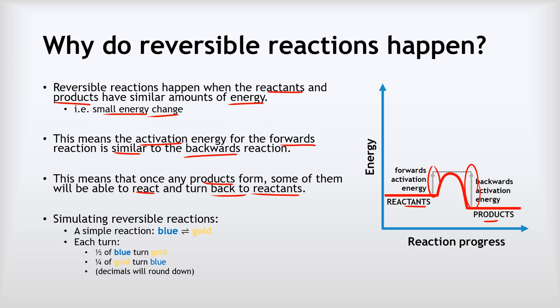We can see that on the reaction profile: the reactants and products have similar energy levels, with a small difference between them. Once any products form, there's a good chance some of them will have the activation energy required to react and turn back into reactants. We can see this if we do a sort of simulation — a pretend reversible reaction in which blue squares will react and turn into gold squares. Every turn, half of the blue squares will turn gold and a quarter of the gold squares will turn blue, rounding down any decimals.